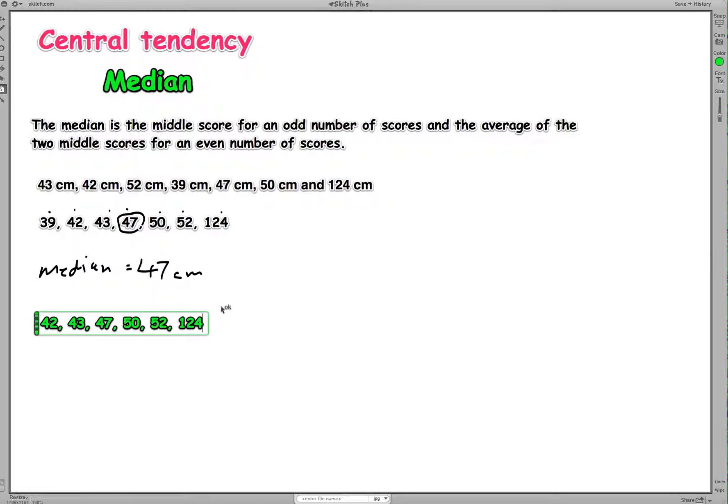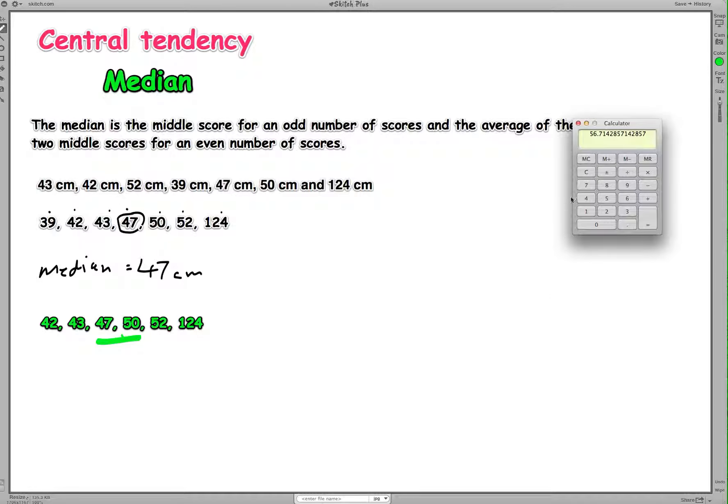So what we do in this case is we find the average of the two middle scores. So the two middle scores in this case are 47 and 50. I'll just get my pen tool back. 47 and 50 here. So what we need to do is find the average of both of these scores. Now, to do that, we simply add the scores together, 47 plus 50, and then divide by 2 because the number of scores is 2. So we'll get the calculator out to do that. We'll go 47 plus 50 equals divided by 2 equals 48.5. So in this case, the median equals 48.5.